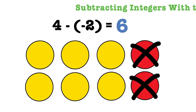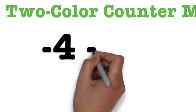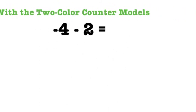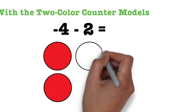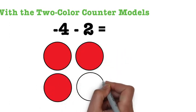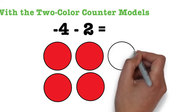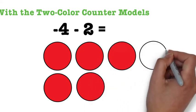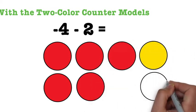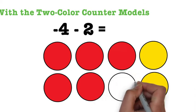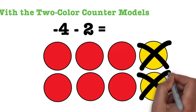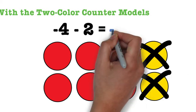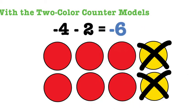Let's try one more problem that is asking us to subtract a negative and a positive integer: negative 4 minus 2. To set this problem up, we need four red circles or four negative counters. Since the problem is asking us to remove two positives, we will need to add two sets of zero pairs. Now that the zero pairs have been added, we can take away two positives. When we do that, we are left with six negative counters, which means our answer to negative 4 minus 2 is negative 6.